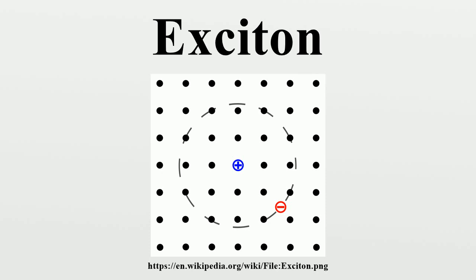An exciton can form when a photon is absorbed by a semiconductor. This excites an electron from the valence band into the conduction band.